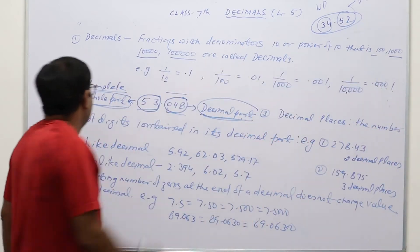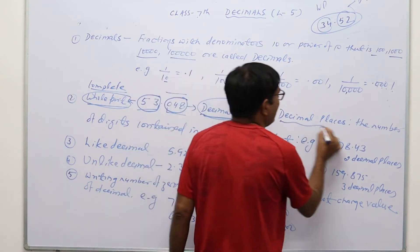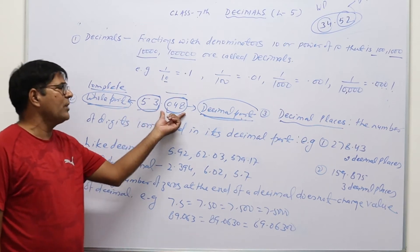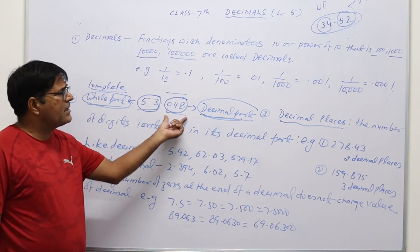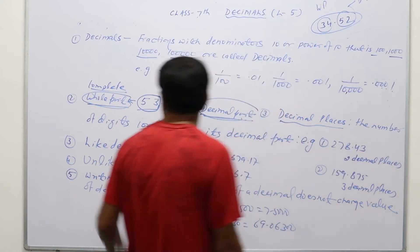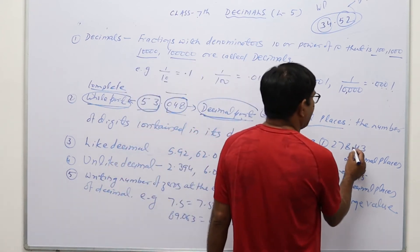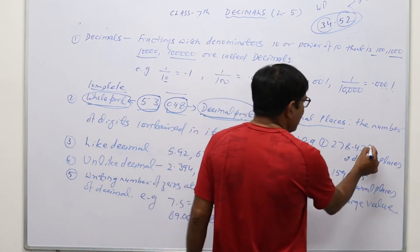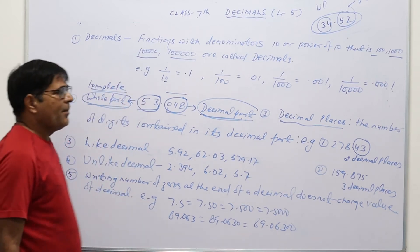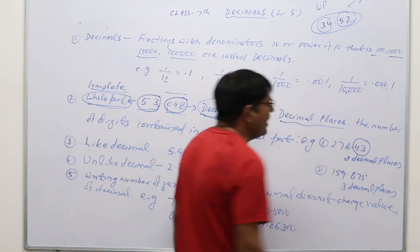So this is about the whole part and decimal part. Now, what do you understand by decimal places? Decimal places means in any decimal number, the number of digits that are after the decimal — the count of those digits — is known as decimal places. So decimal places means the number of digits contained in its decimal part.